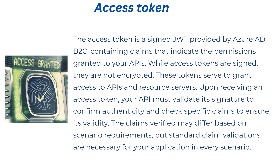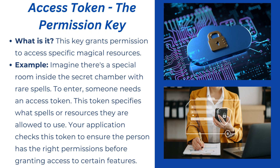To give an example, an access token is like a key that grants permission to access a specific resource. Imagine a special room inside a secret chamber with rare spells. To enter, someone needs an access token that specifies what spells or resources they can access. Think of Harry Potter — Harry might be allowed to access certain books, while Hermione might be allowed to access different books. Each access token carries information about which specific resources that person has access to.